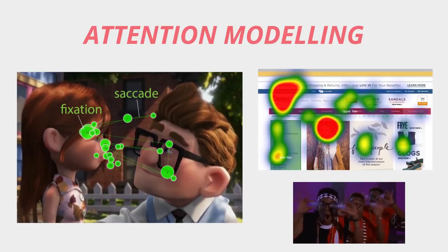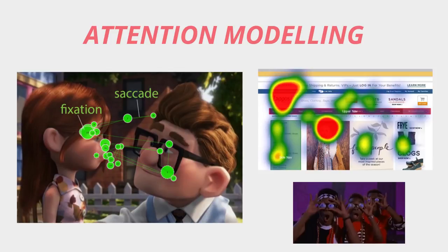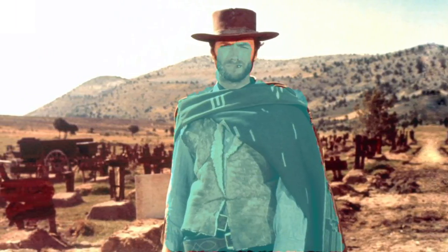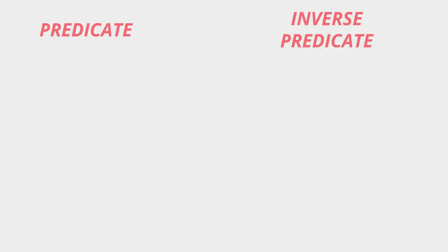Attention modeling has been an icebreaker for a lot of tough modeling problems like image captioning and question answering. In fact my own research work at IISc focused on visual attention. The paper tries to model attention shifting in two ways: predicate and inverse predicate.